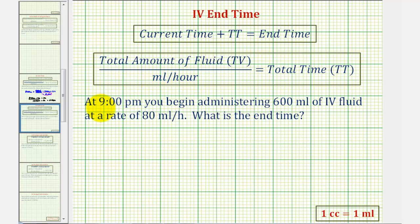As an example, let's say at 9 p.m. you begin administering 600 mls of IV fluid at a rate of 80 mls per hour. What is the end time?